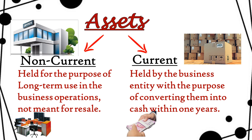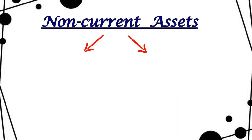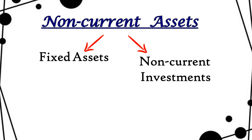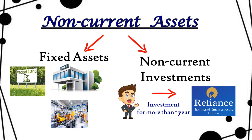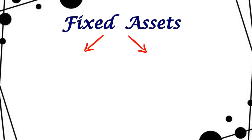Non-current assets are further divided into two categories: fixed assets and non-current investments. Non-current investments mean long-term investments — for example, Mukesh purchased shares of Reliance company and will not sell them for at least one year. Fixed assets are those which the business purchases for long-term use, like land, building, and machinery, which help in running the business.